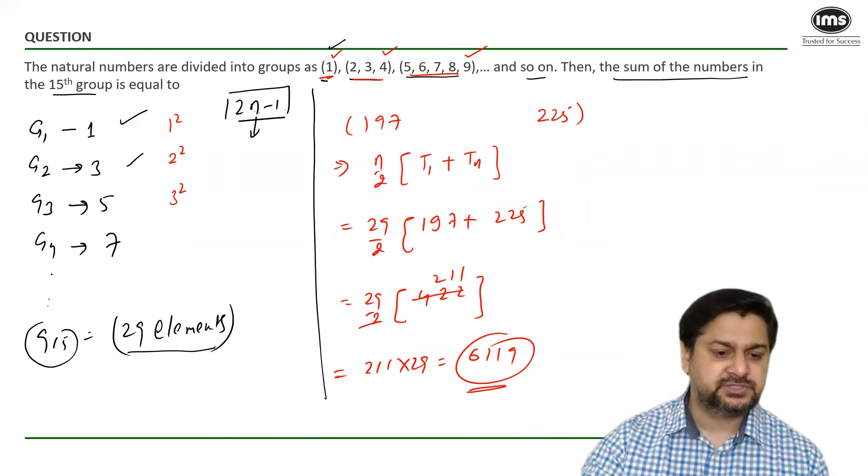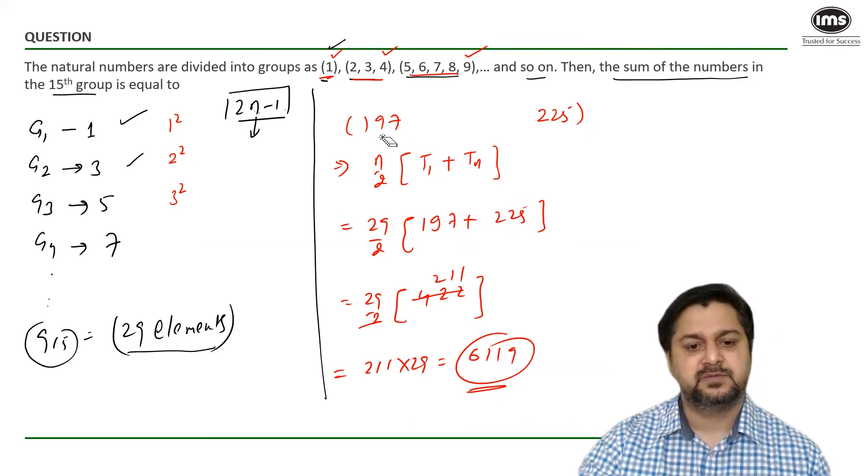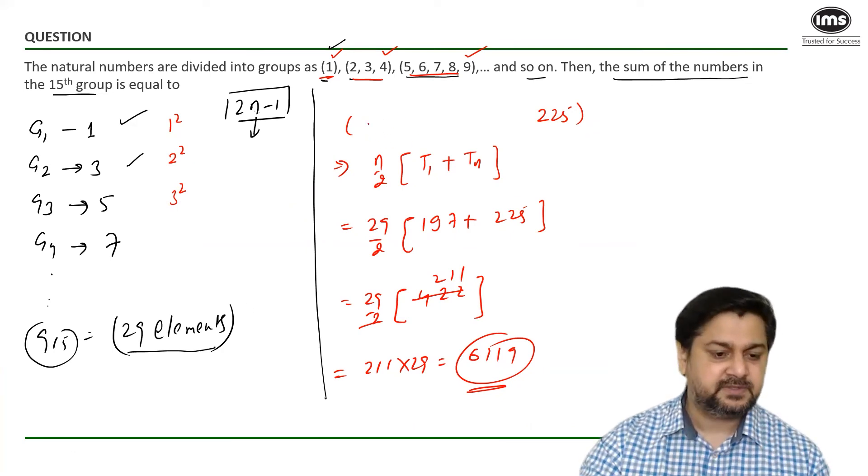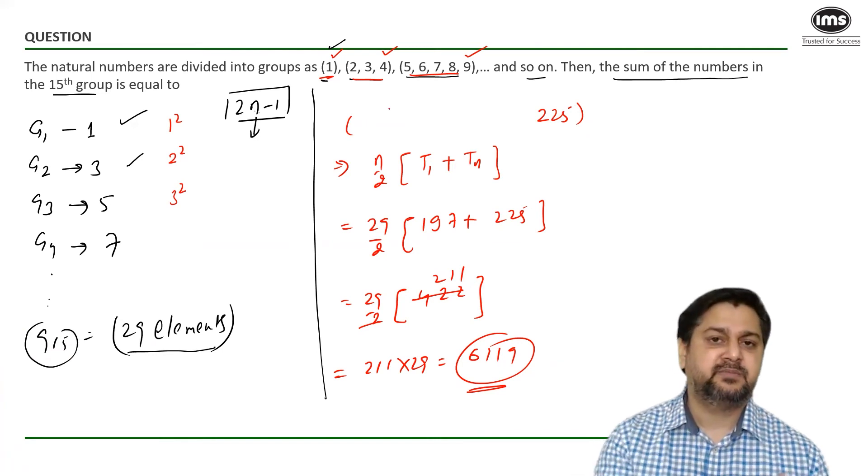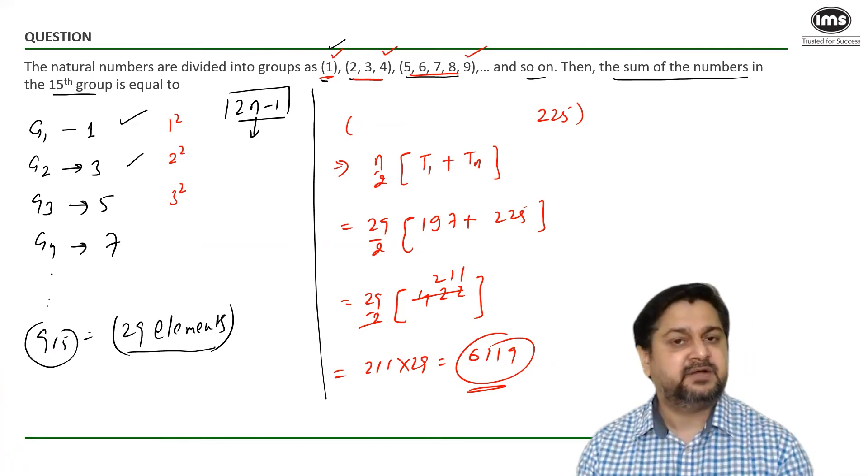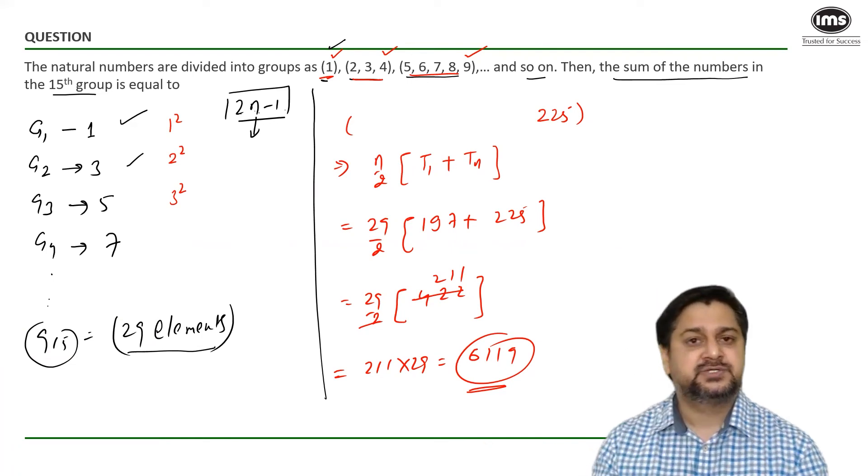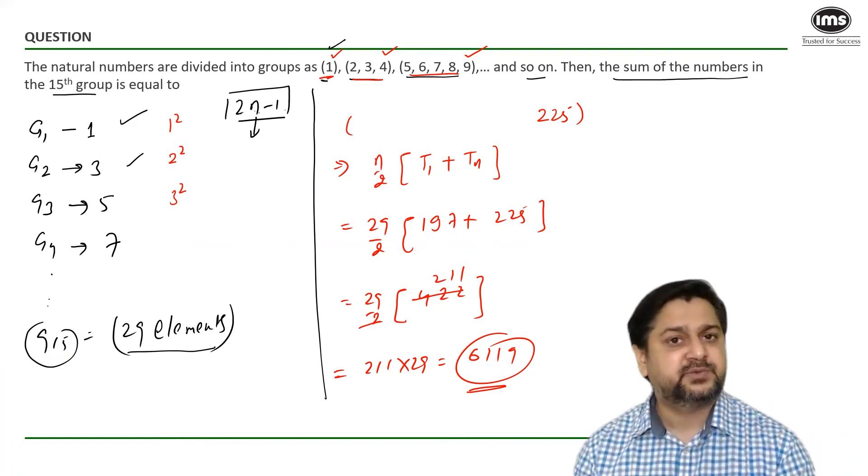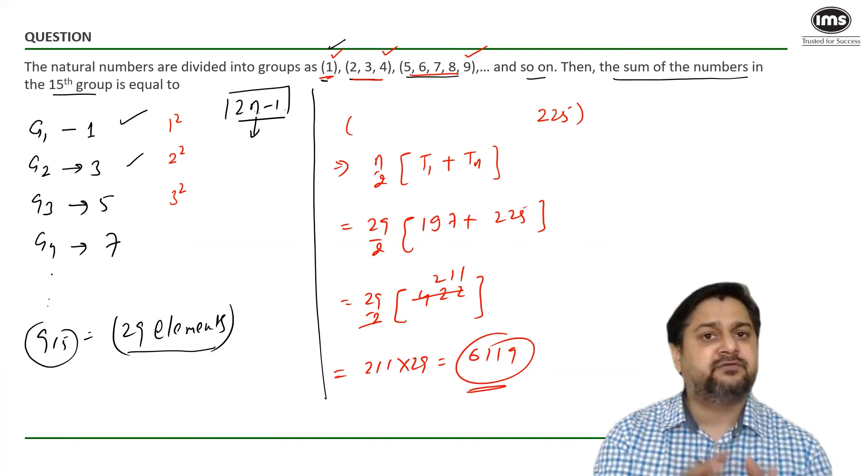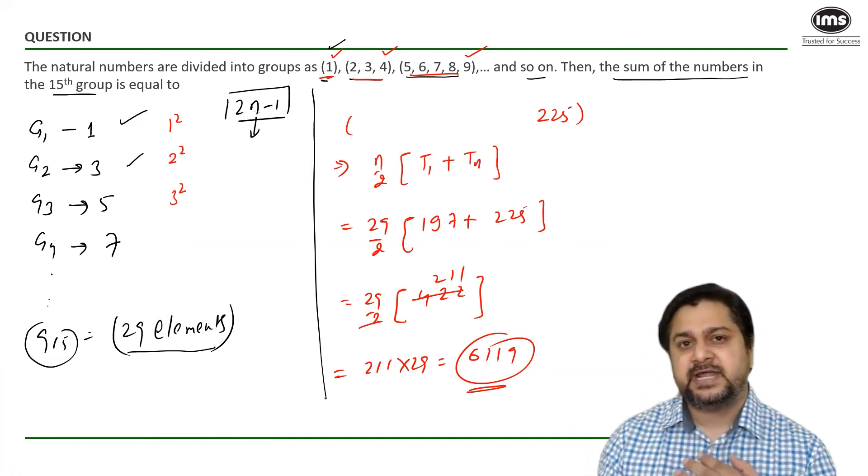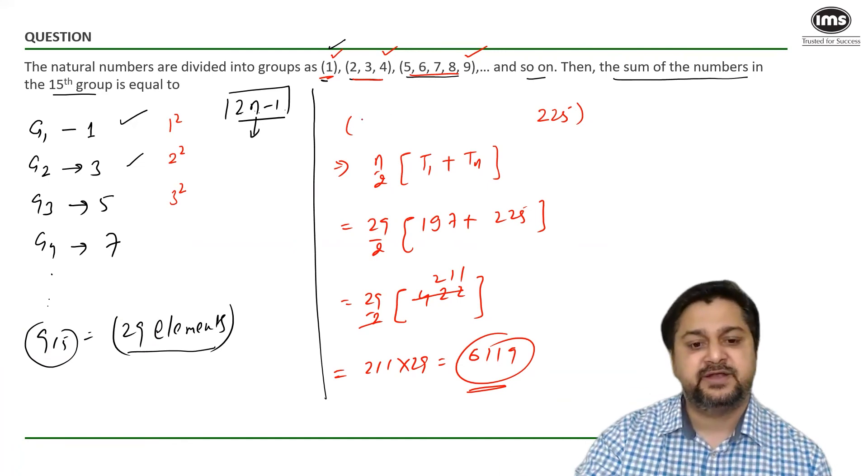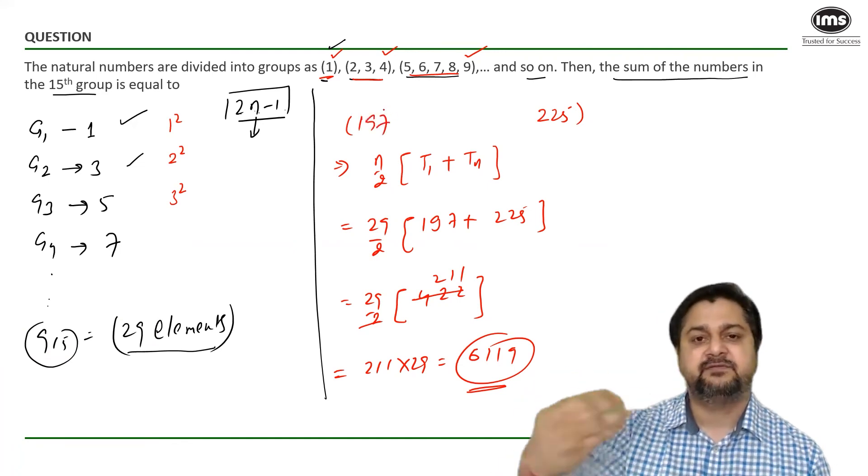Now you could have also looked at the question not very differently but almost the same. If you are not able to visualize what is the first element, if you remember the 15th group would be ending with 15 square, then the 14th group would be ending with 14 square. So the last element of the 14th group would be 14 square, that is 196. So the 15th group would be starting with 197 and thereby we can find out the sum.